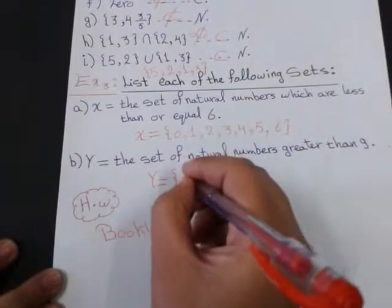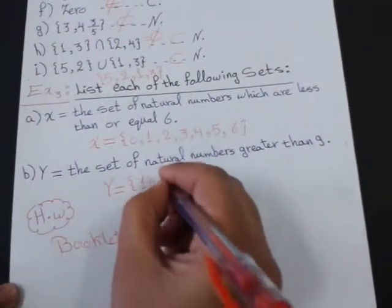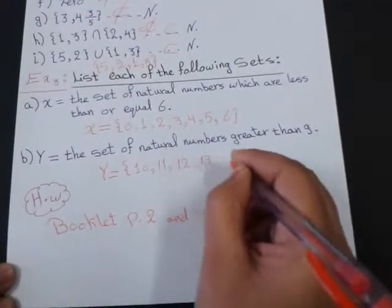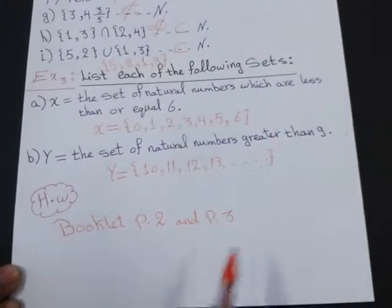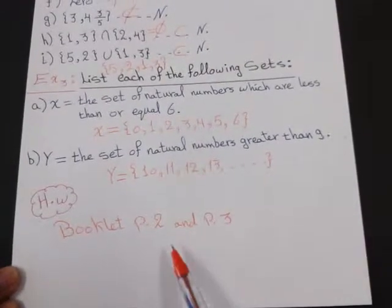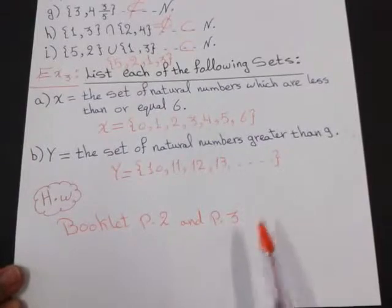10, 11, 12, 13 and so on. Because this is an infinite set. Has no end. I have a lot of numbers greater than 9. I can't count all of them.